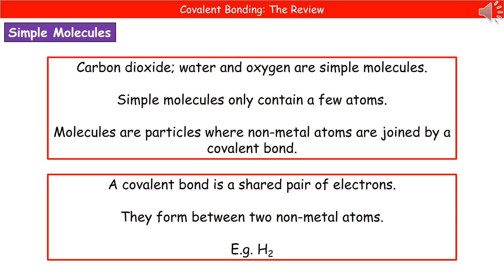Welcome to our review on covalent bonding. The first thing we're going to consider are these things called simple molecules. Simple molecules are ones that only contain a very small number of atoms — things like carbon dioxide, water, and oxygen.